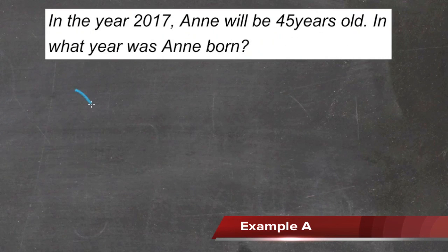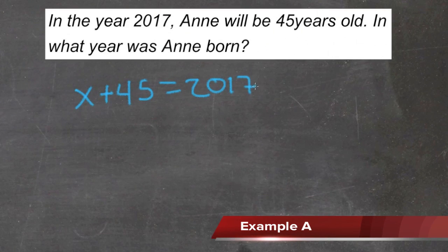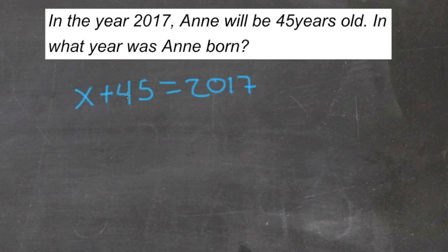So we know that the year that Ann was born plus 45 will be equal to 2017. Because in 2017, she'll be 45 years older than she was the year she was born. So all we have to do to find out the year she was born is get rid of this 45. We'll subtract 45 over here and subtract 45 over here.